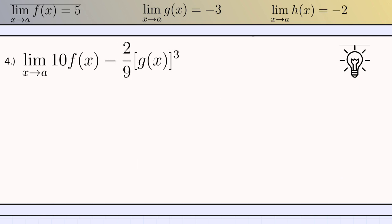Let's proceed to number 4: the limit of 10 times f of x minus 2, over 9 times g of x cubed. Again, we substitute the values of the function: 10 times the limit of 5 as x approaches to a, minus 2, over 9 times the limit of negative 3 as x approaches to a, cubed. Again, 10 is on the left side of the limit of 5 as x approaches to a because of theorem number 3.